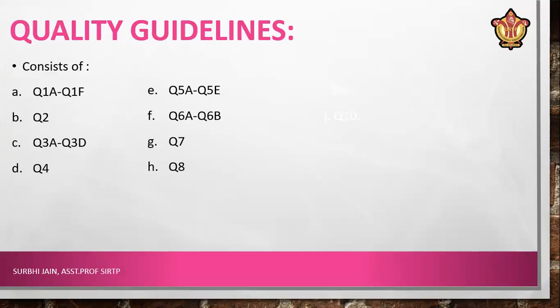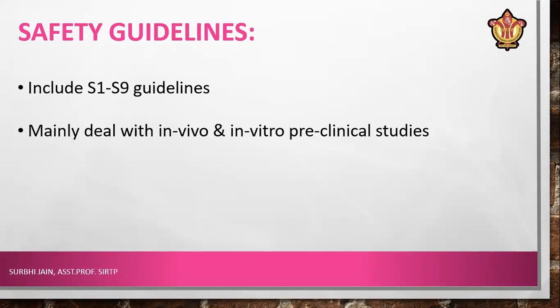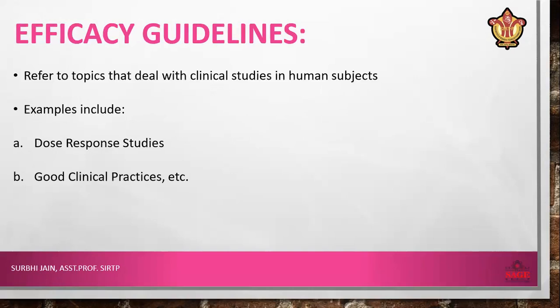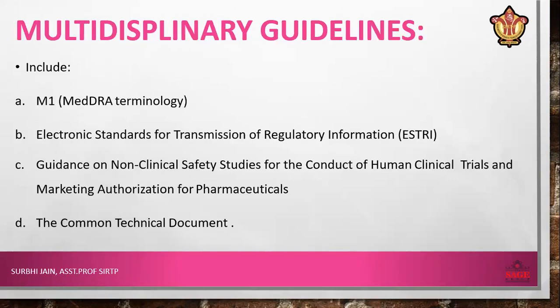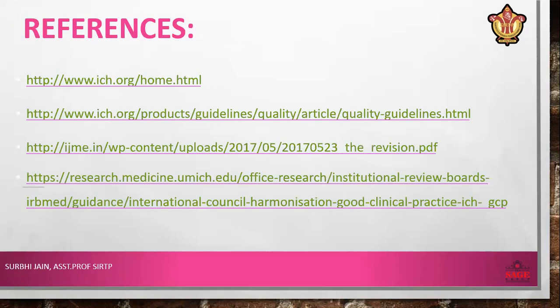Quality guidelines are classified as Q1A to Q1F, Q2, Q3, Q4, Q5, Q6, up to Q8 — detailed descriptions will be covered in the next lecture. Safety guidelines run from S1 to S9, dealing mainly with in vivo and in vitro preclinical studies. Efficacy guidelines deal with clinical studies such as dose response studies and good clinical practices. Multidisciplinary guidelines include M1 (MedDRA terminology), ESTRI (Electronic Standard for Transmission of Regulatory Information), guidance on non-clinical safety data, and the Common Technical Document (CTD).